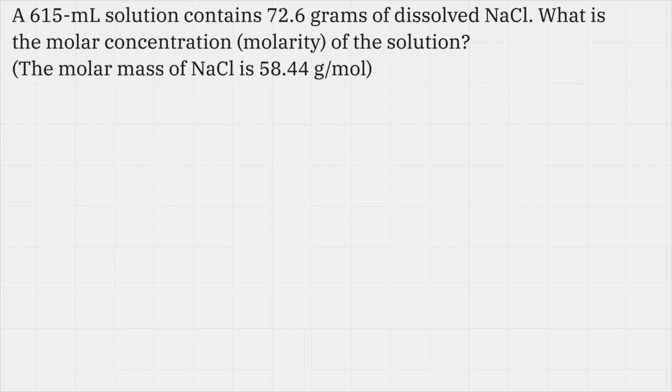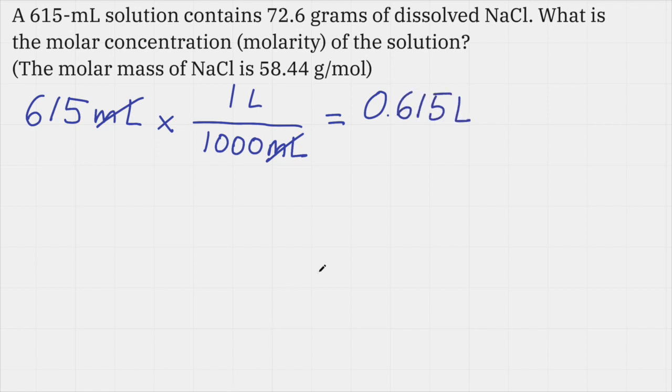I'm given the volume of the solution here in milliliters, and molarity is always expressed in moles per liter. So I'm going to convert 615 milliliters to liters. This is how I would set it up: 615 milliliters times the conversion factor that relates liters to milliliters. One liter is 1,000 milliliters. To do the conversion, I'm going to take 615 times 1, which is just 615, and divide by 1,000. I'm just moving the decimal place three spaces to the left.